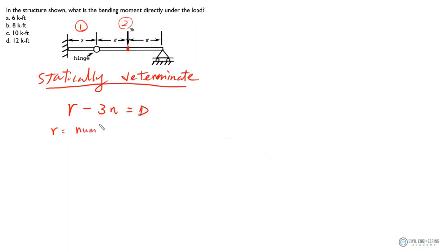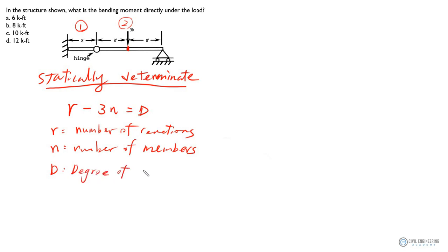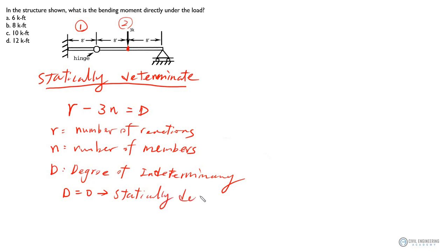R is the number of reactions and N is the number of members, and D is the degree of indeterminacy. If D equals zero, that means this structure has just enough force equilibrium equations to solve for all the reactions — so it is statically determinate. Let's apply this to our structure. The number of members is two.